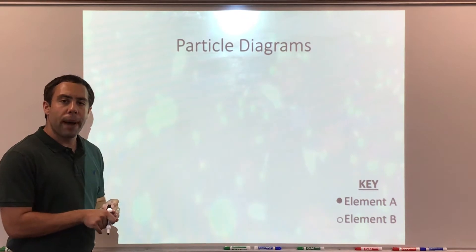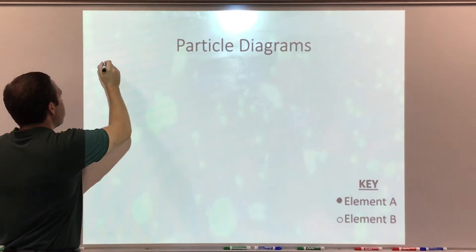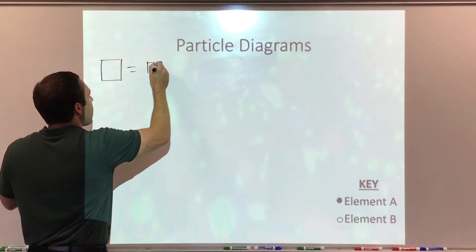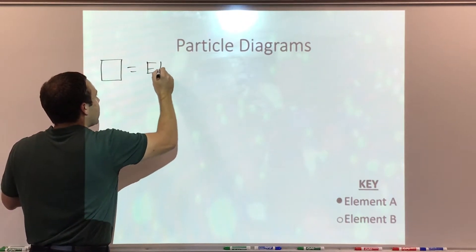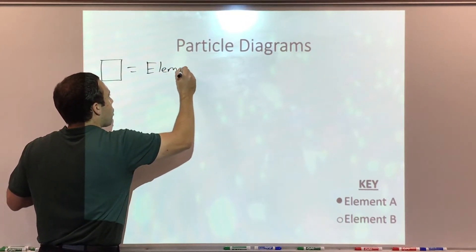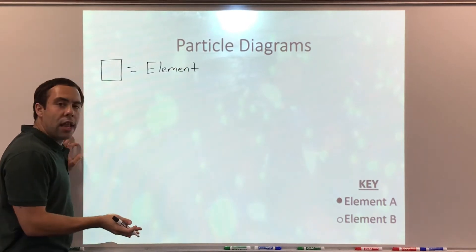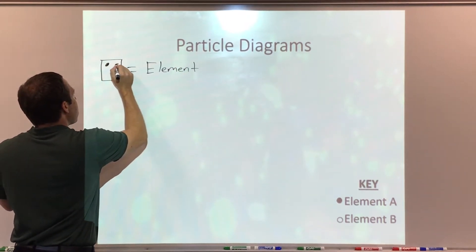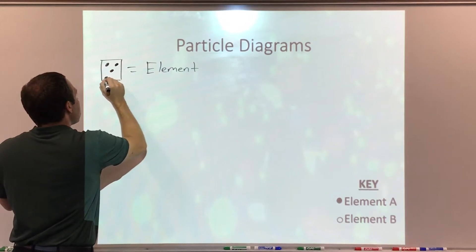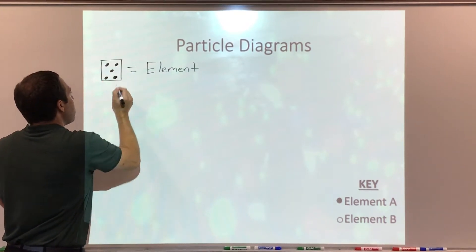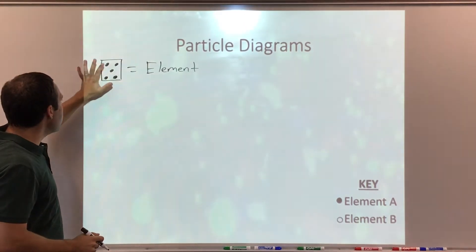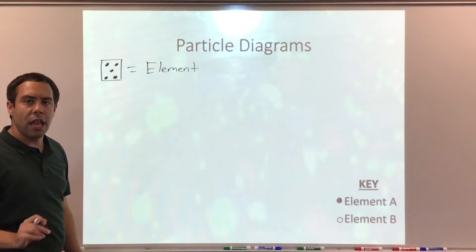Let's start off by drawing one element. So we draw our box, and inside the box, we're going to pick one element. Let's start with element A. I'm going to draw five shaded circles, so inside the box, the particle diagram shows five of the same element.